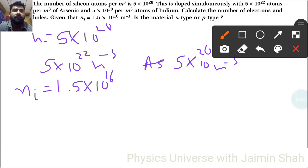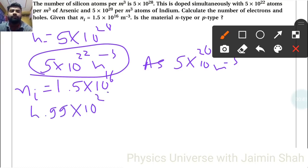That value minus ni gives 4.99×10²². That is our ne because ni is small in comparison with this. So ne = 4.99×10²².